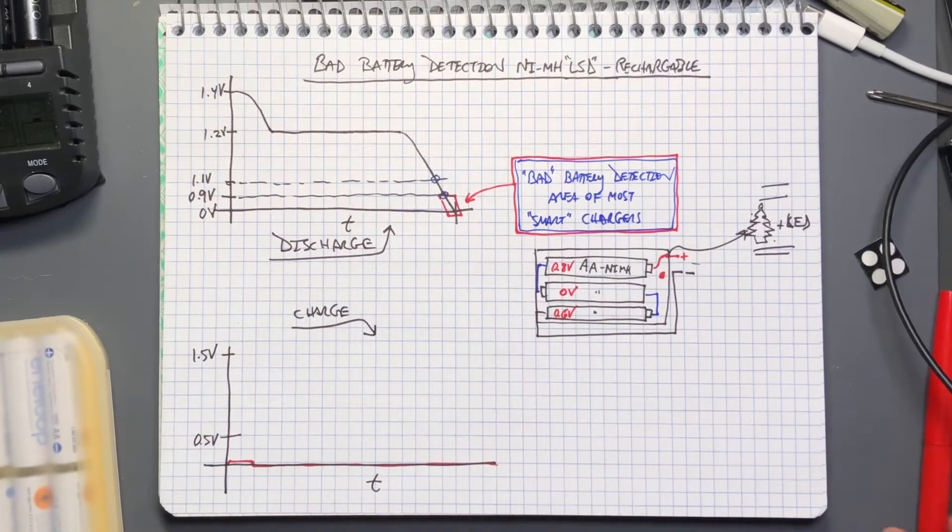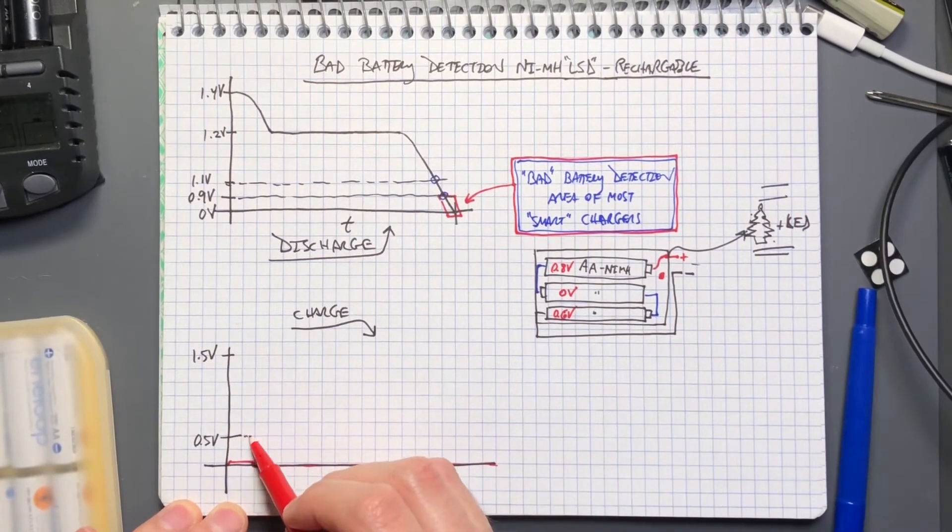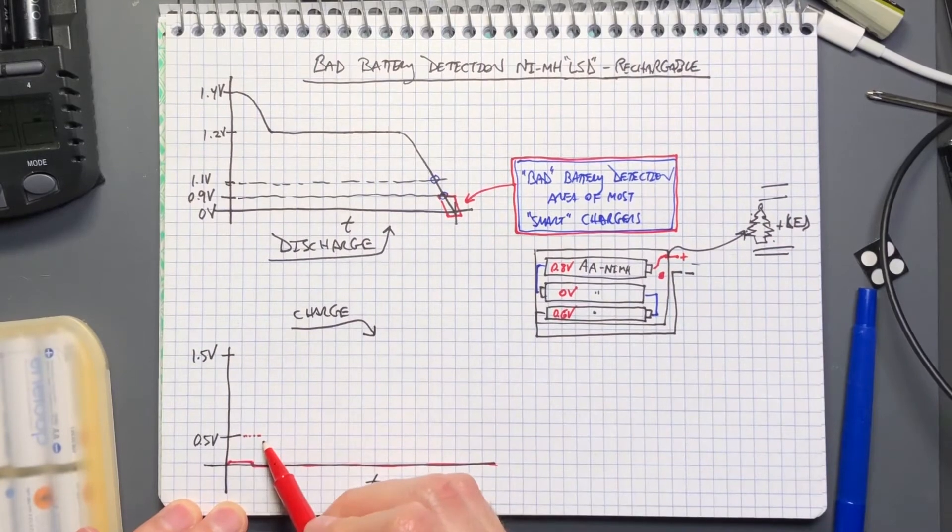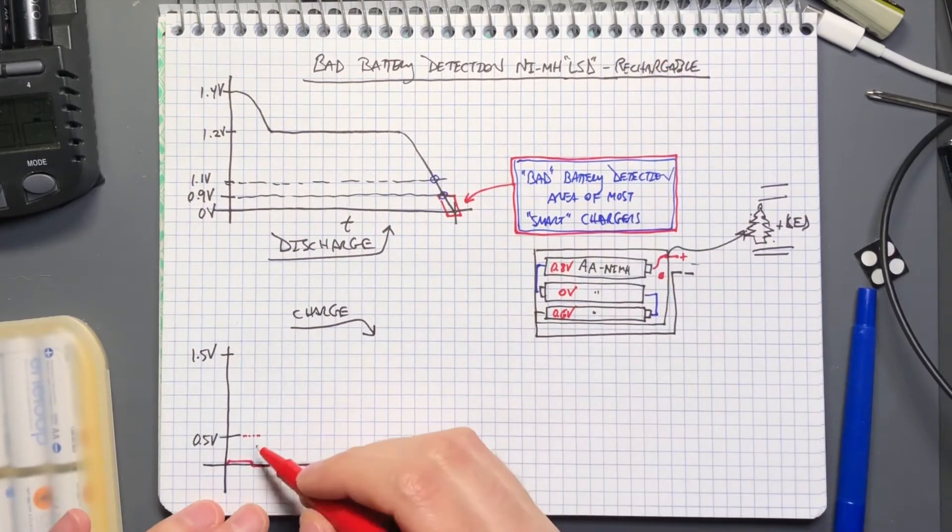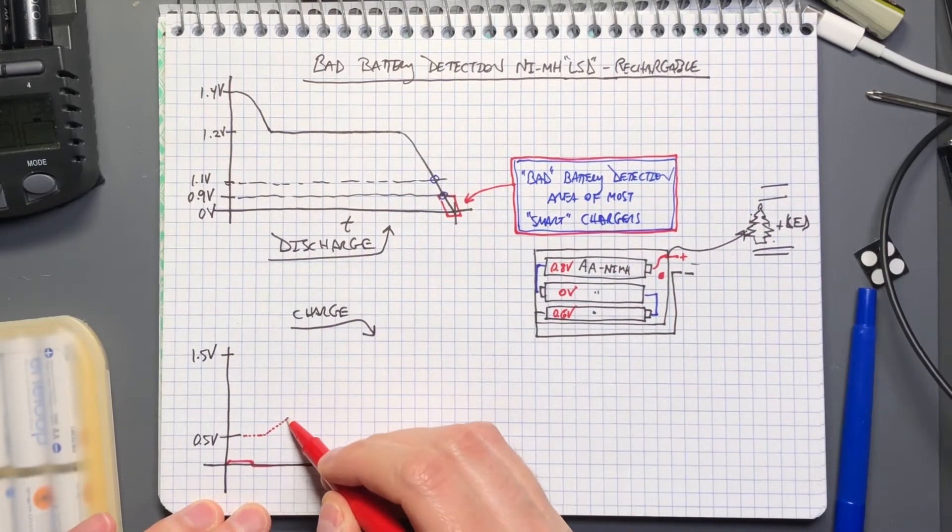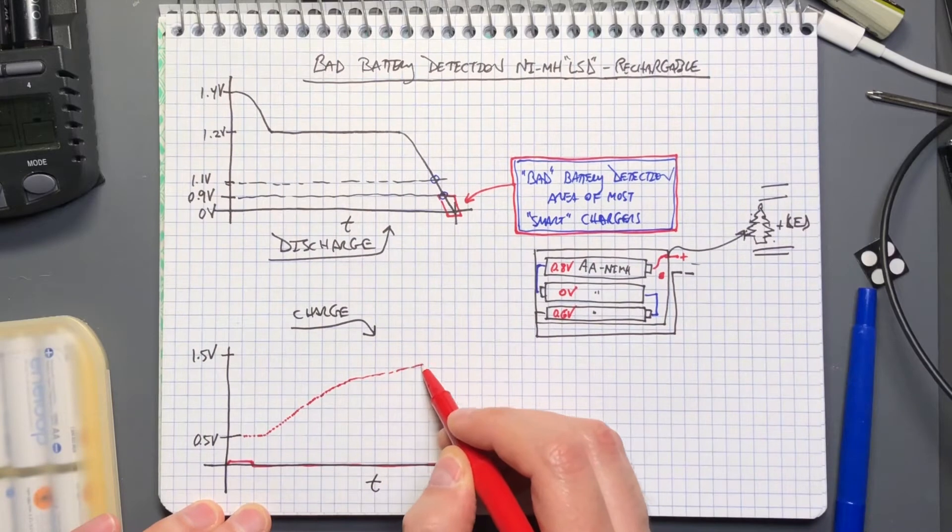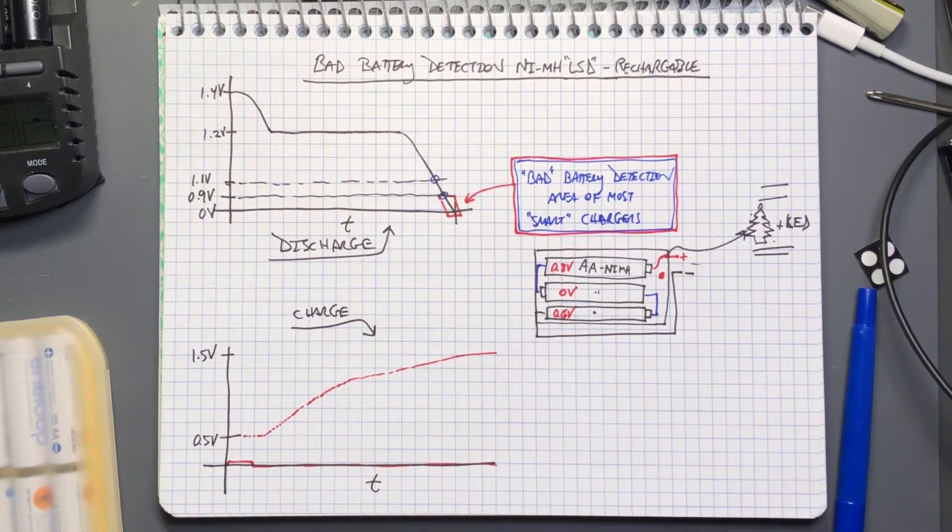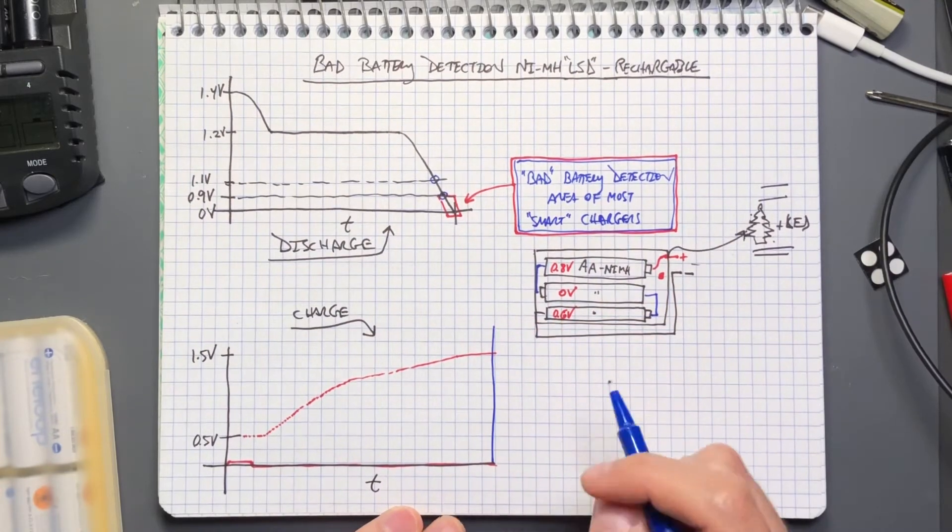In that case the charger will see the voltage at 0.5 volts, it'll test it and go okay, clear to charge, apply the constant current to it. Your voltage will start rising usually pretty quick and then it takes a much longer time for it to get up to 1.5 volts.